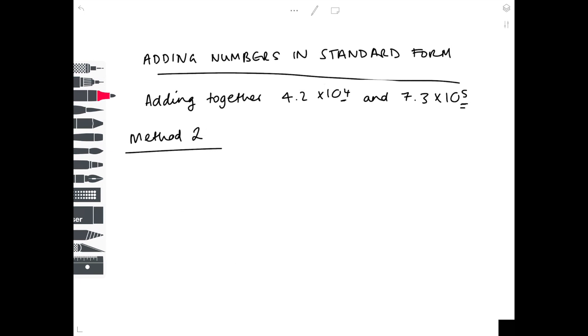If you're not that comfortable with standard form and converting backwards and forwards, you might prefer to use method two where you write both numbers out as an ordinary number. First of all, 4.2 times 10 to the 4 is the same as this number here. We need to move that decimal point four times: 1, 2, 3, 4.